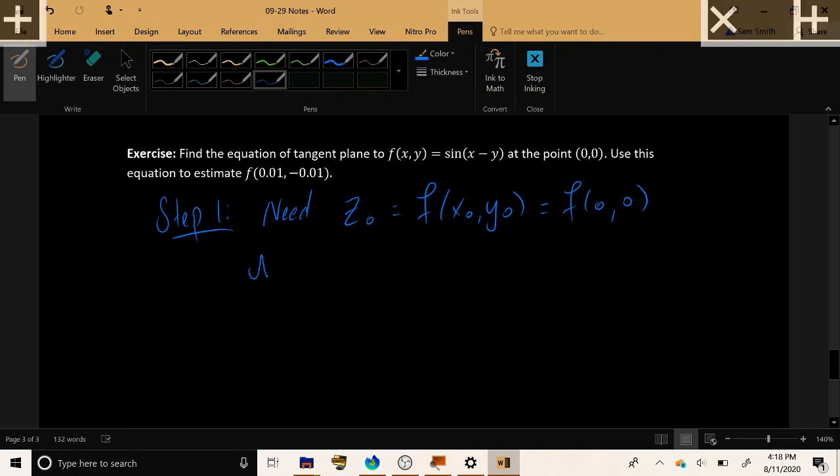We're also going to need the value of the first derivative in the x direction at the point f of x, at the point x naught, y naught, which is 0, 0.